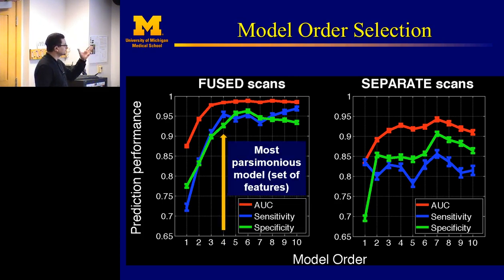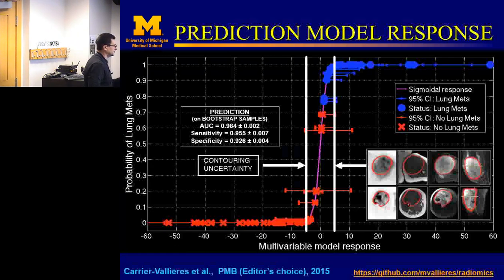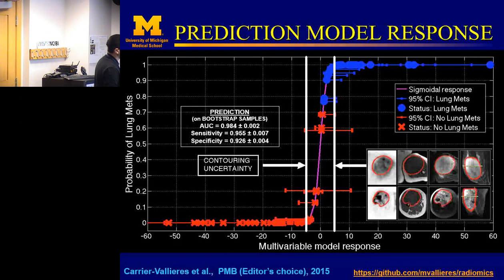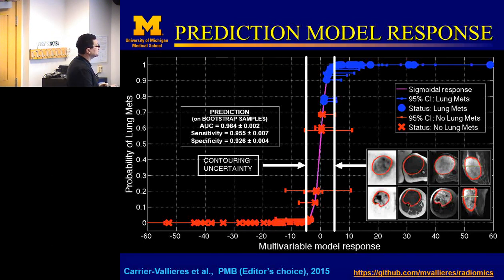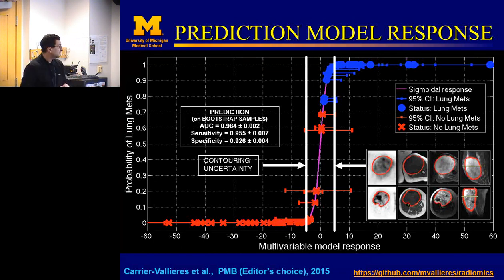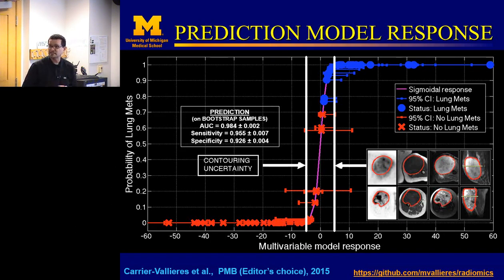The principle is parsimonious — what is the simplest model we can use? In this case, four parameters, all related to identifying zones in the texture model. Pretty much what we observed visually: if you do this data reduction approach and build your model, you end up with similar results. The prediction is very high — 0.98 on bootstrap. But if you look at the uncertainty generated from image processing (contouring), that's 20%, so about 80% is the safe prediction power we have.